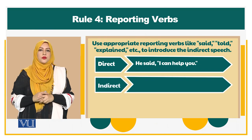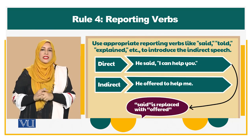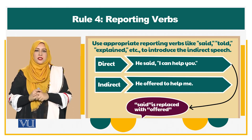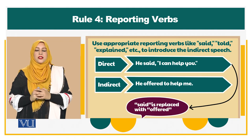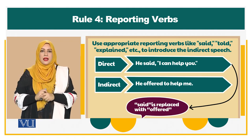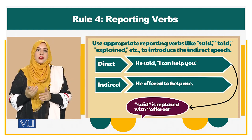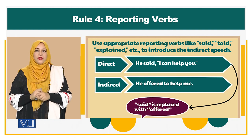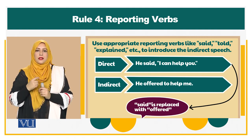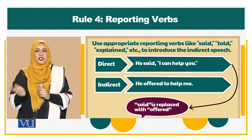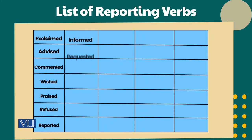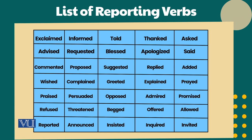The fourth rule of conversion is the rule of reporting verb. When converting a direct speech into indirect speech, you need to use the appropriate reporting verb to show that it is indirect speech. For example, the direct speech 'He said, can I help you?' becomes in indirect speech 'He offered me to help.' There are multiple reporting verbs such as said, told, explained, appreciated, wished, requested, and added. Use these words when converting according to the sentence structure.